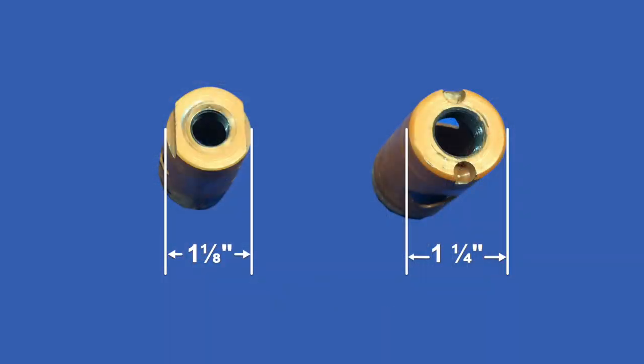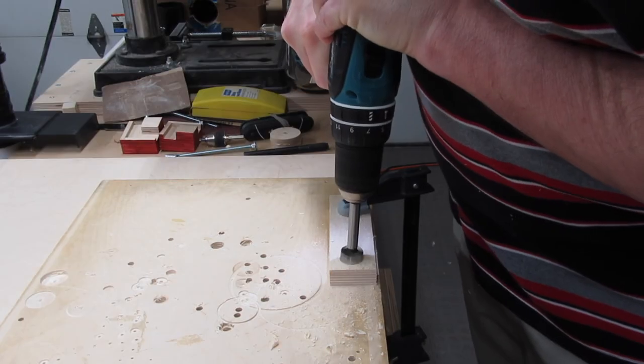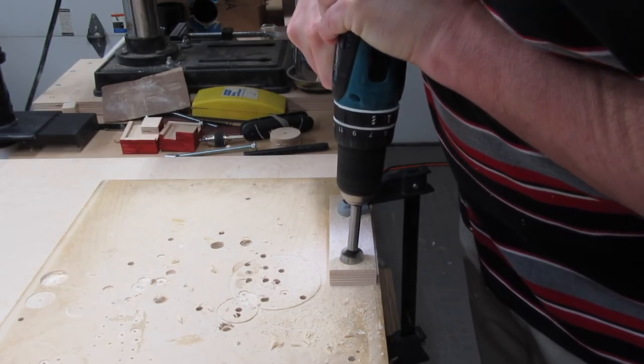You can only use quick release mandrels with hole saws one and a quarter inches or more in diameter. They're the ones with the larger threaded hole, and they're also the only ones with post holes. If you want to use the smaller diameter hole saws, you'll need a second, non-quick release mandrel. For me, I use Forstner bits for the smaller holes, so it's not an issue.